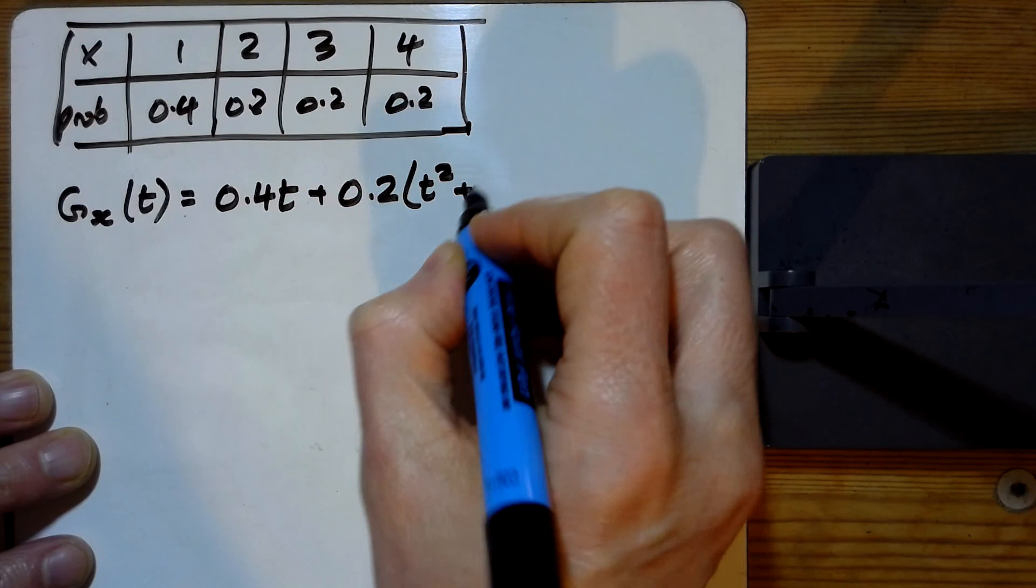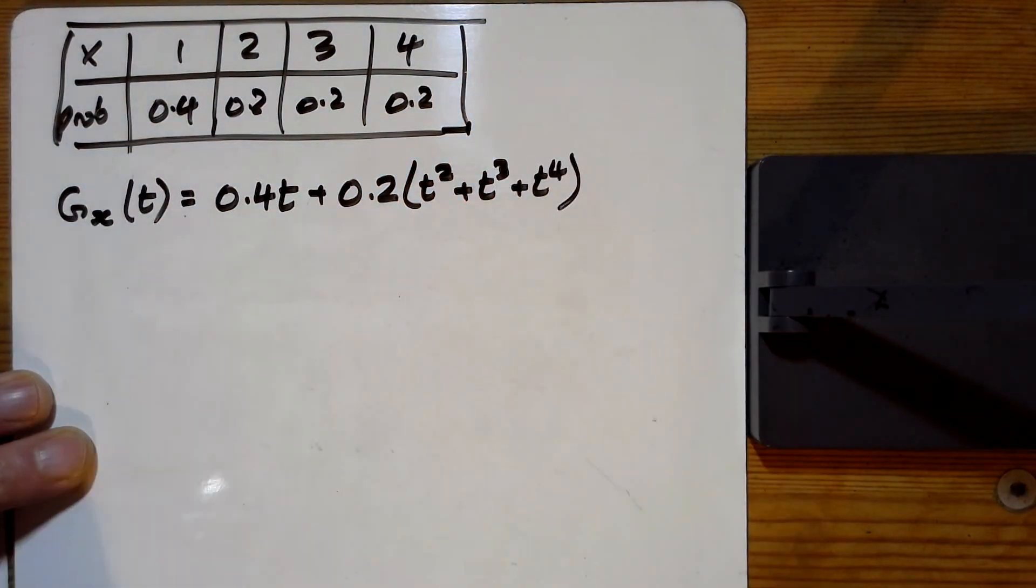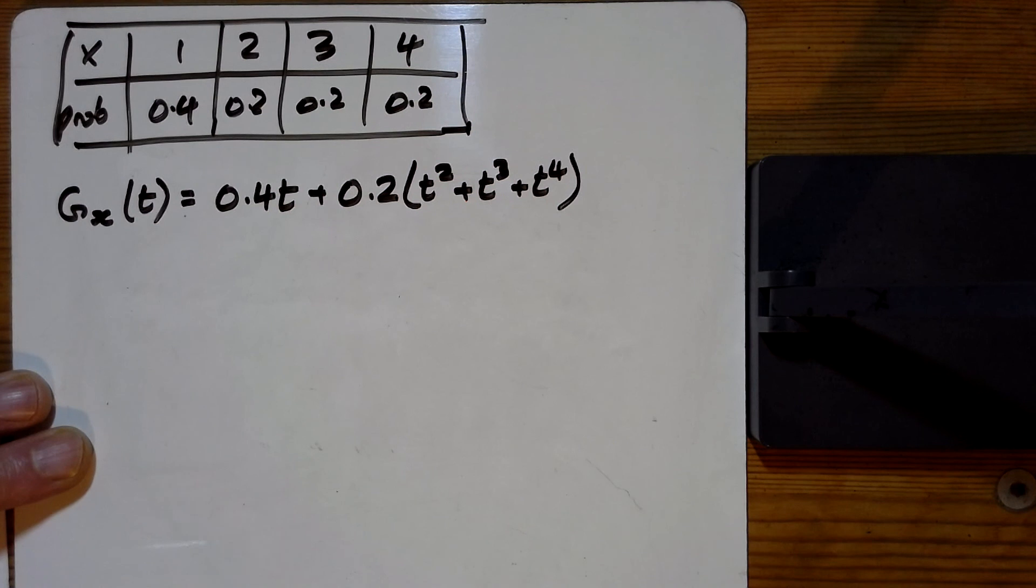Or I could just summarize it, I suppose, couldn't I? Because each of them are 0.2. So I just do that.